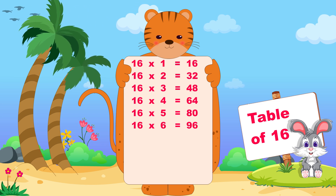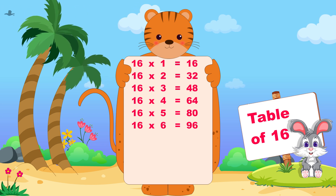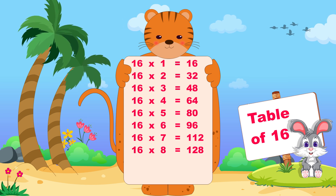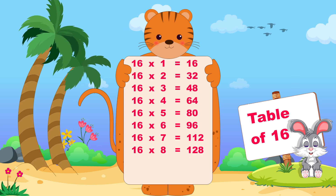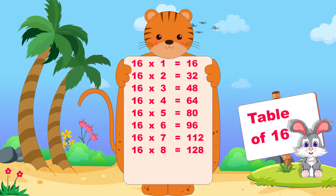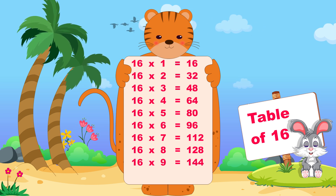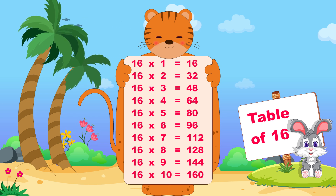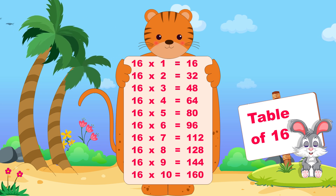Sixteen sixes are ninety-six, sixteen sevens are one hundred twelve, sixteen eights are one hundred twenty-eight, sixteen nines are one hundred forty-four, sixteen tens are one hundred sixty.